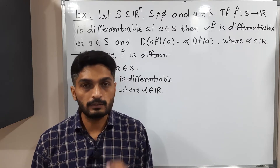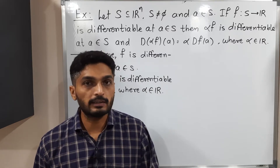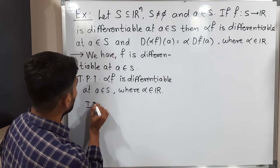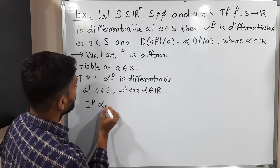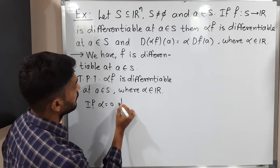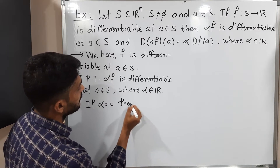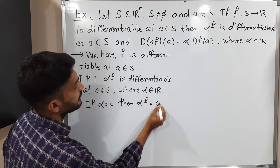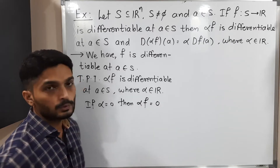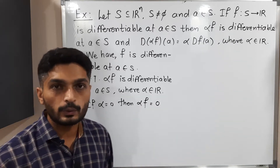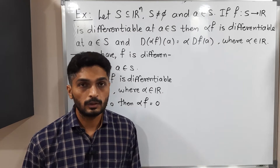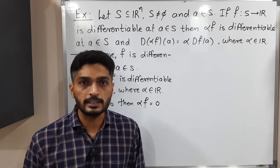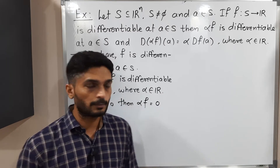Let us start with the first possibility: α is equal to zero. If α equals zero, then αF is obviously equal to zero, since zero times any function gives zero. So it is a constant zero function, and obviously it is differentiable at A.